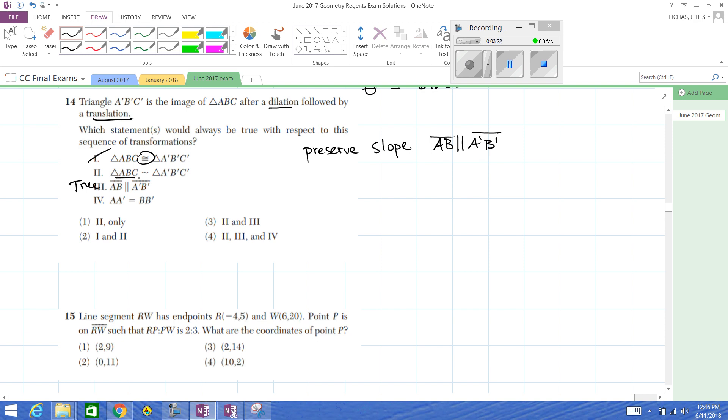Similar, yes. Dilations are similarity transformations. And then, is AA prime, that length, equal to BB prime? That we don't know from a dilation. So the distance from A to A prime might be different than the distance from B to B prime in a dilation. A translation, these would be the same. So we got to get rid of that. The dilation loses both of these. So it's two and three. And that's it.